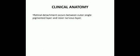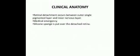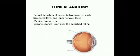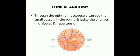Clinically, retinal detachment occurs between the outer single pigmented layer and the inner nervous layer; it is a medical emergency and can be repaired by a silicone sponge kept over the detached retina with the help of bands. Through the ophthalmoscope, small vessels in the retina can be seen. In diabetes and hypertension, there are changes in the vascular structure within the retina observable through the ophthalmoscope.